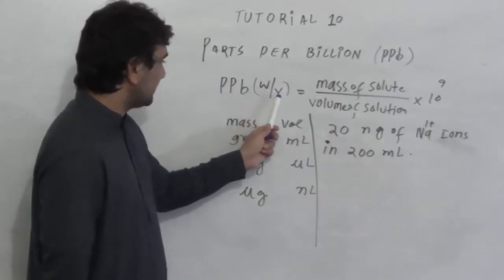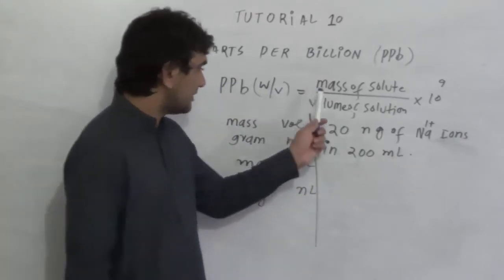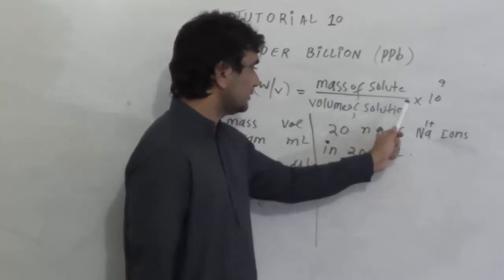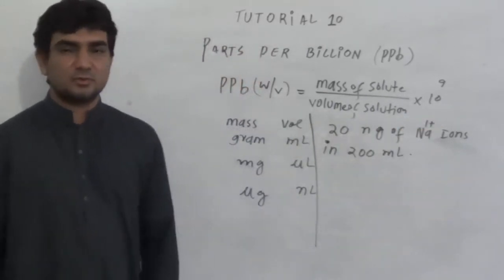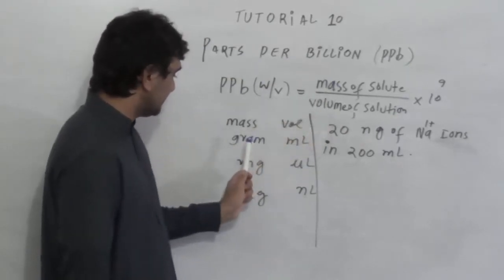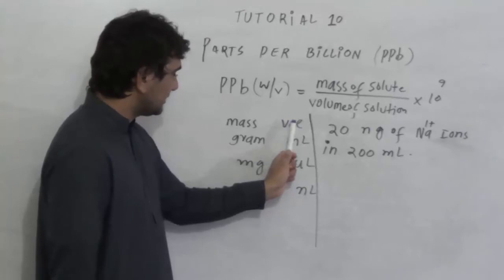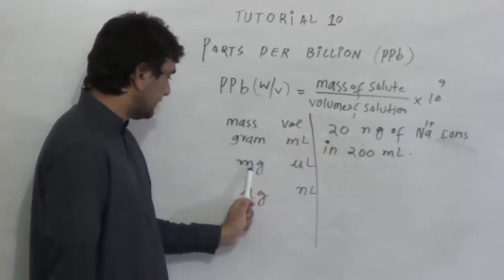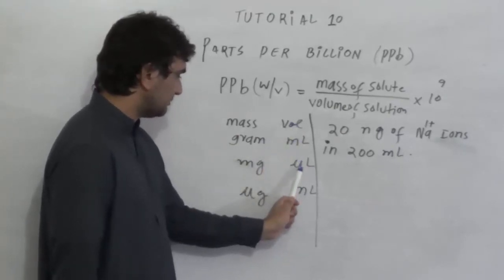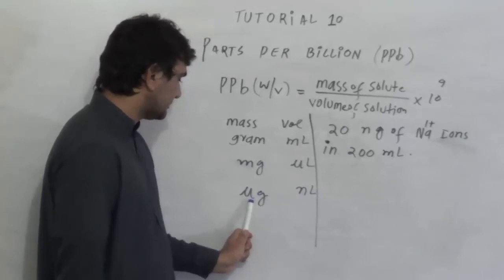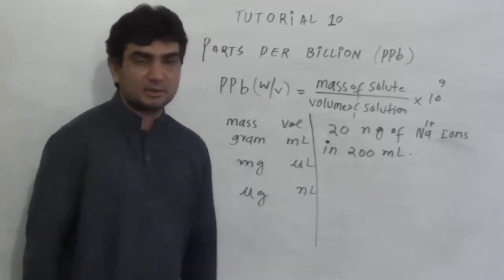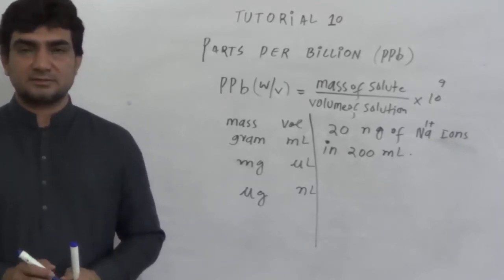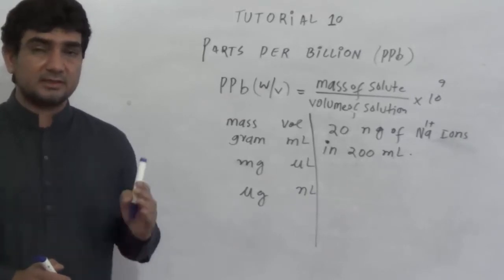To calculate parts per billion weight by volume, the formula is mass of solute divided by volume of solution, multiplied by 10 raised to power 9. If mass is in grams then volume must be in ml. If mass is in micrograms then volume must be in microlitres. Similarly, if mass is in nanograms the volume should be in microlitres. These equivalent units ensure accurate calculations of parts per billion weight by volume.